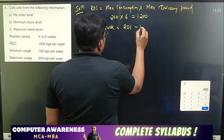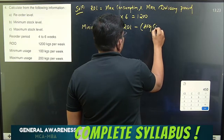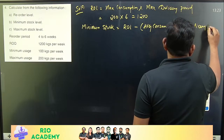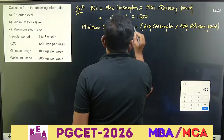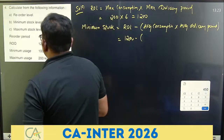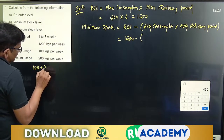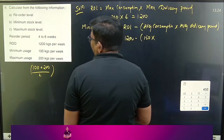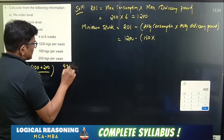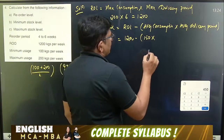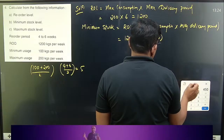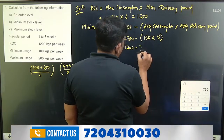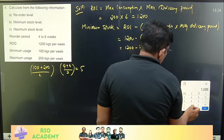Minimum stock level equals reorder level minus average consumption into average delivery period. Reorder level is 1,200. Average consumption is 100 plus 200 divided by 2, that is 150. Multiply by average delivery period: 4 plus 6 divided by 2, that is 5. So 150 into 5 is 750. Therefore 1,200 minus 750.